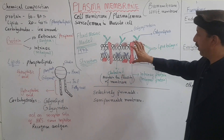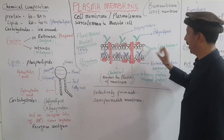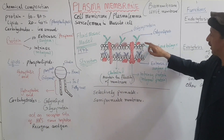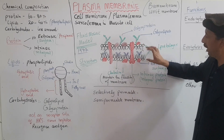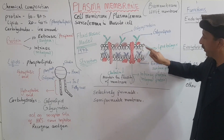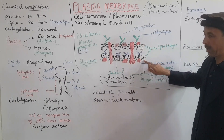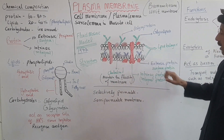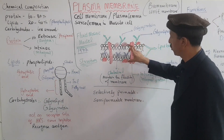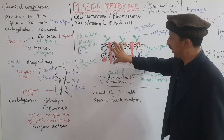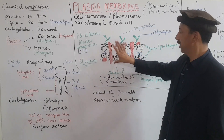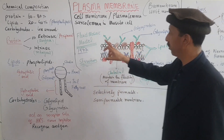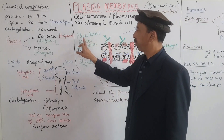According to the Fluid Mosaic Model, the plasma membrane is made of a lipid bilayer. Bi means two layers in different regions. The proteins are embedded differently — the fluid is completely present, and it is liquid in nature.